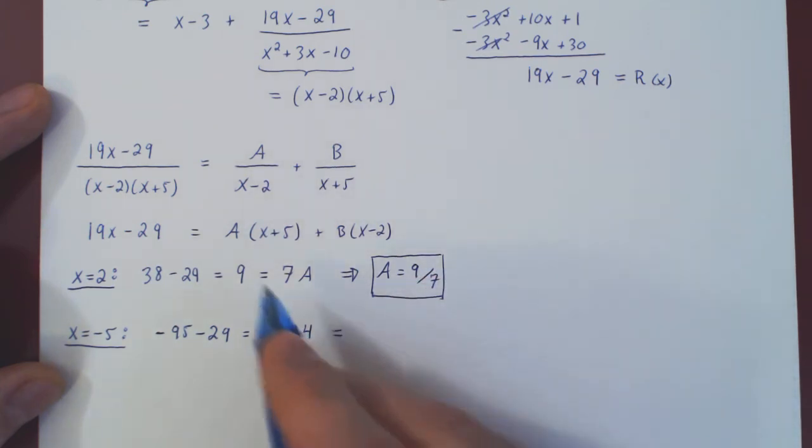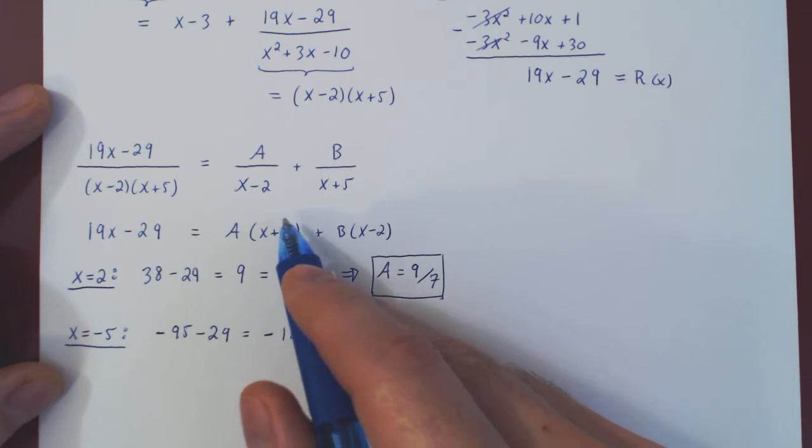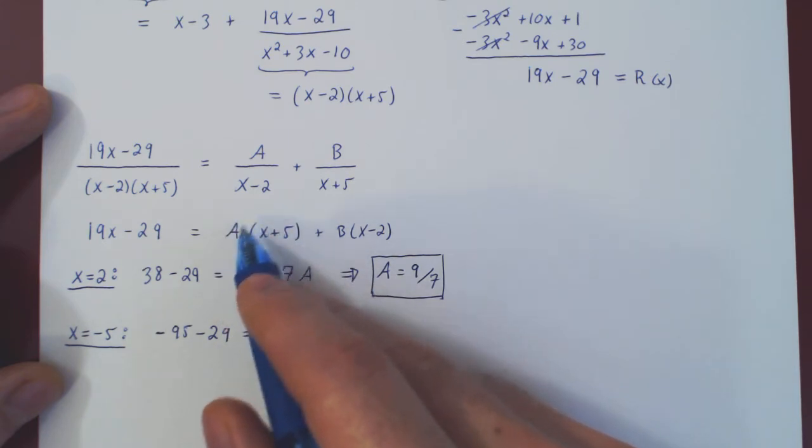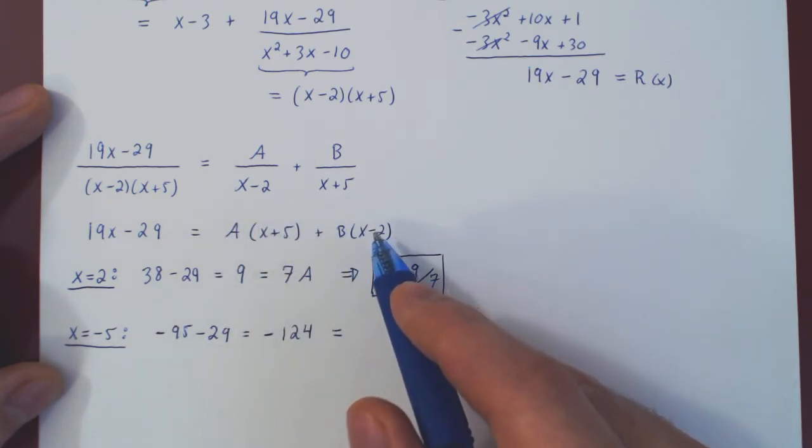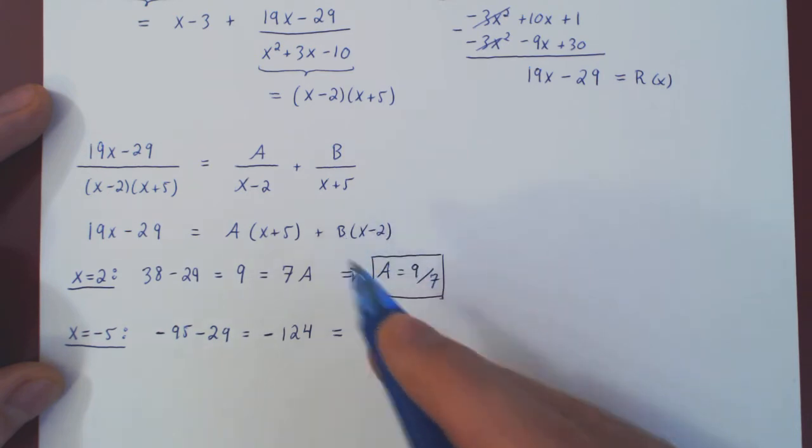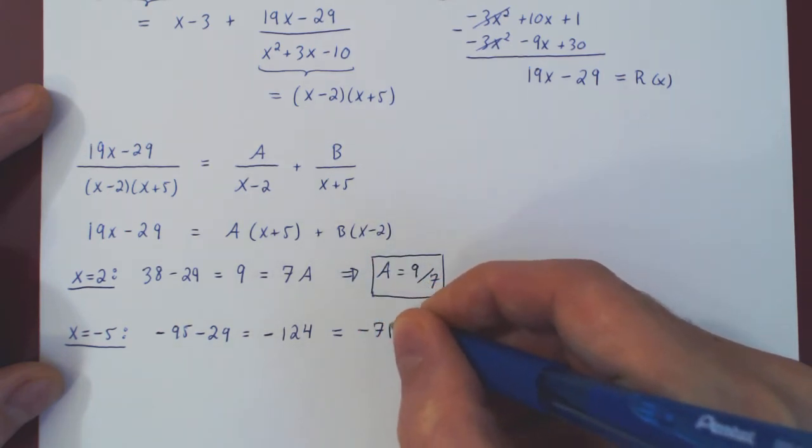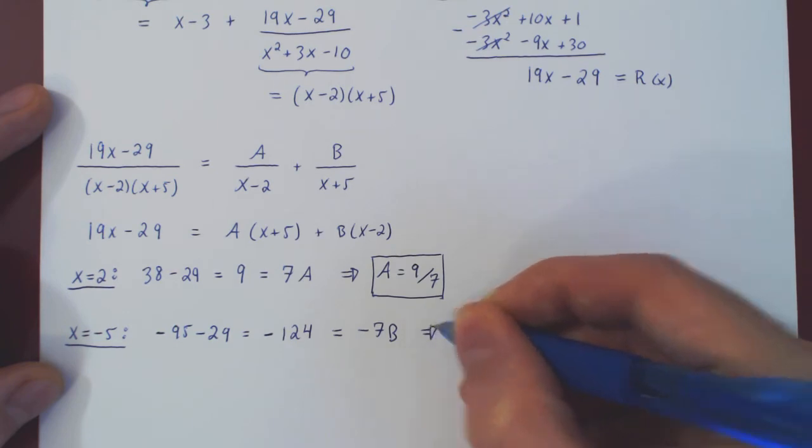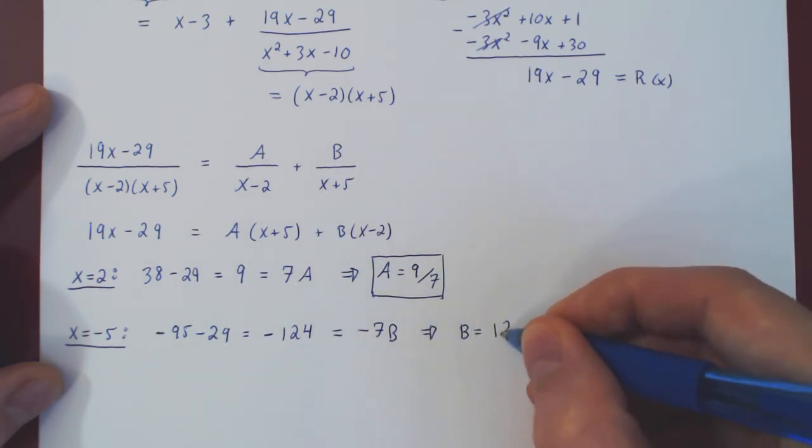And if you divide across both sides by negative 7, you get that B is 124 divided by 7.